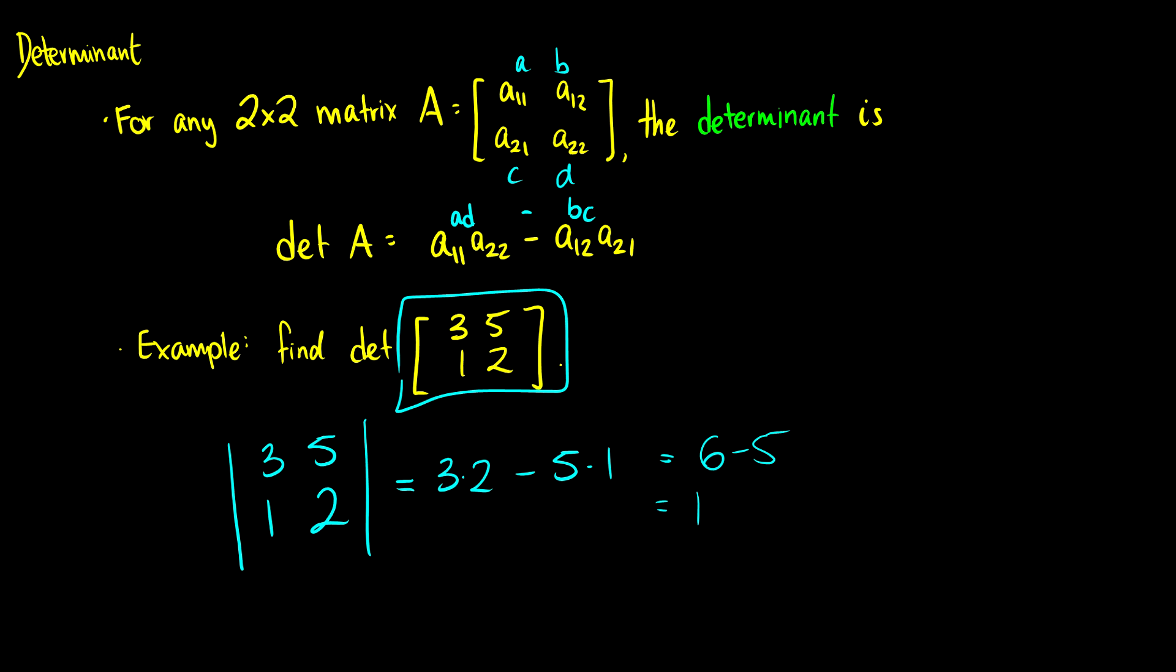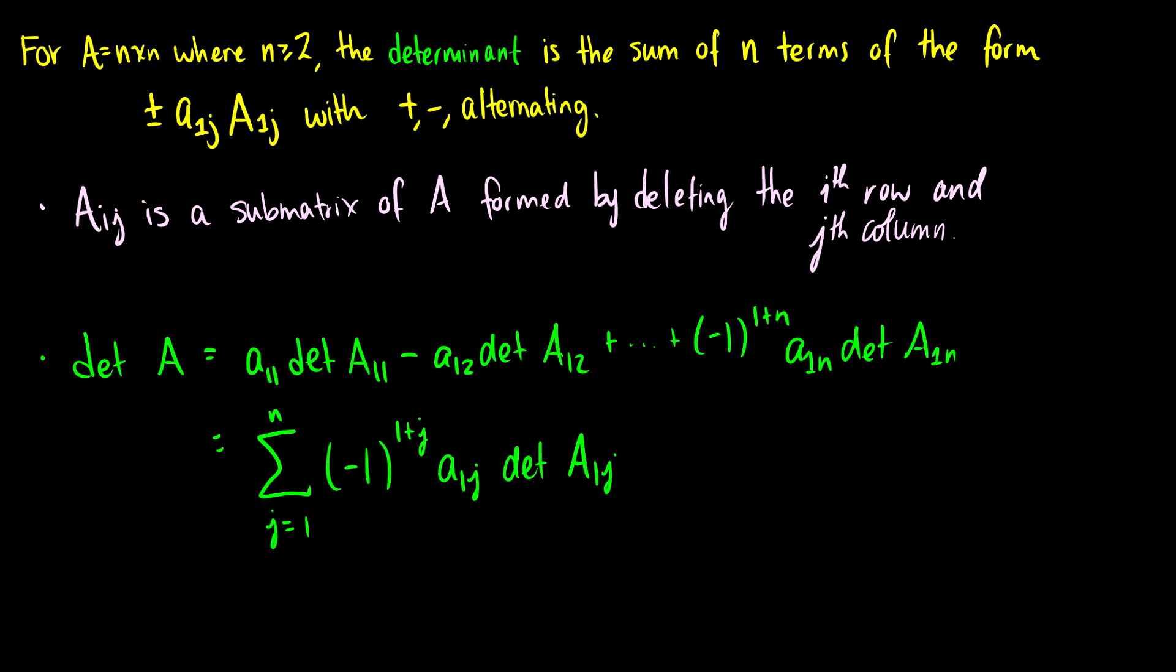And because that's not equal to 0, we know this matrix is invertible. So again, we did show that before. If the determinant is not equal to 0, then the matrix is invertible. Okay, so let's go bigger. Let's go A to n by n, where n is greater or equal to 2.